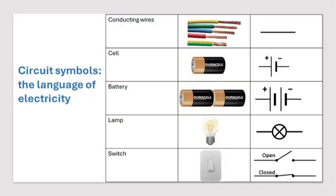We use symbols to show circuits because they make it easier to understand how electricity flows. These symbols are like a special language that helps us draw and read circuit diagrams. Let's learn about some common symbols you'll see when studying circuits. Conducting wires are like the roads that electricity travels on. In circuit diagrams, they are represented by straight lines. These lines show the path where electricity moves through the circuit, just like cars moving along a road. Without conducting wires, electricity wouldn't have a pathway to follow.